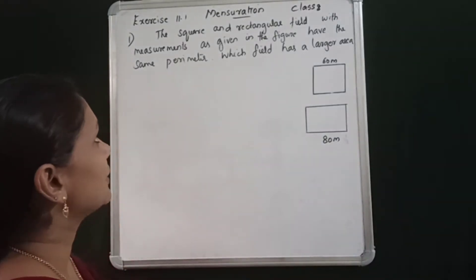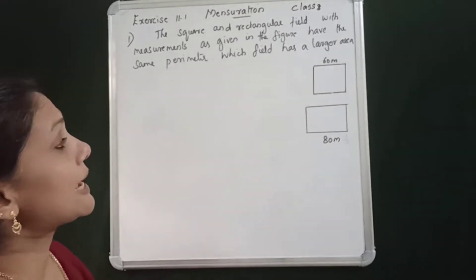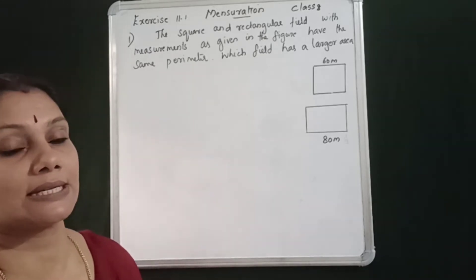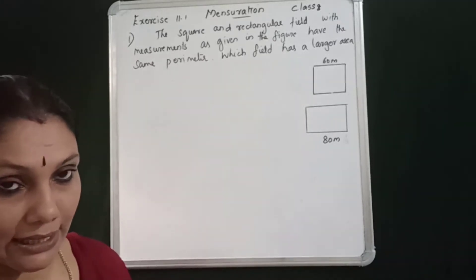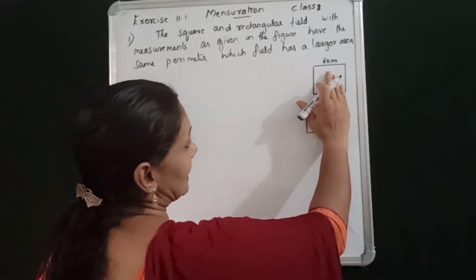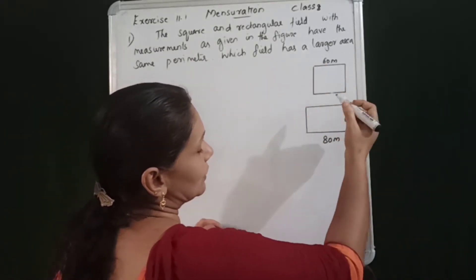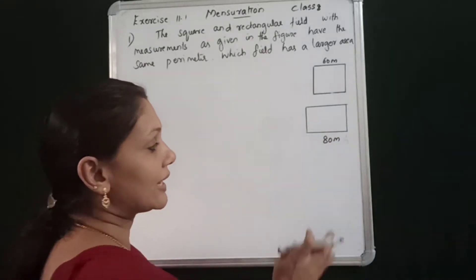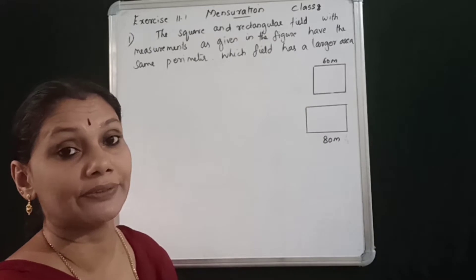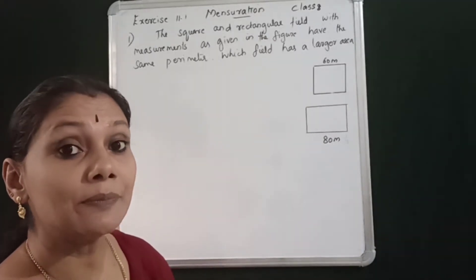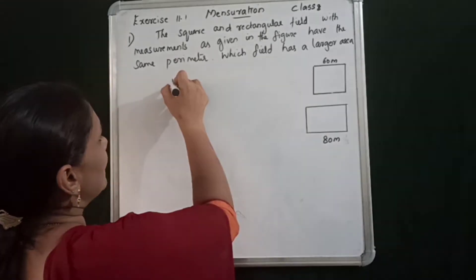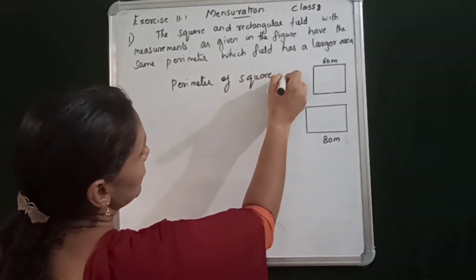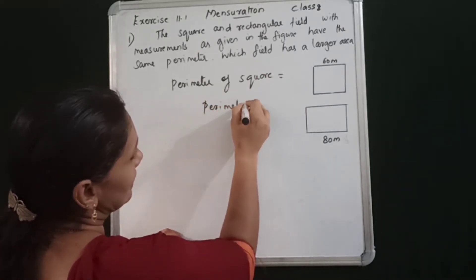The square and a rectangular field with measurements as given in the figure have the same perimeter. Which field has the larger area? The perimeter is the same. Perimeter of square equals perimeter of rectangle.